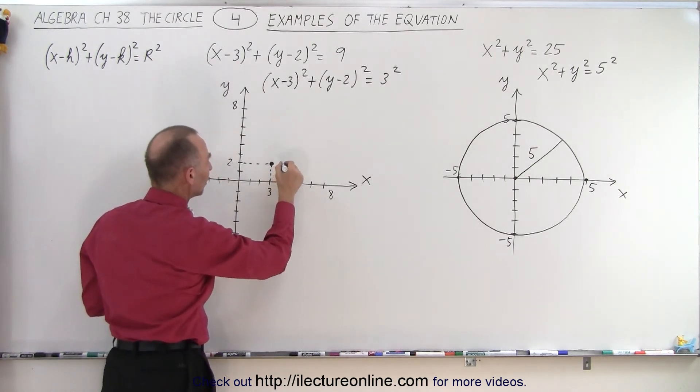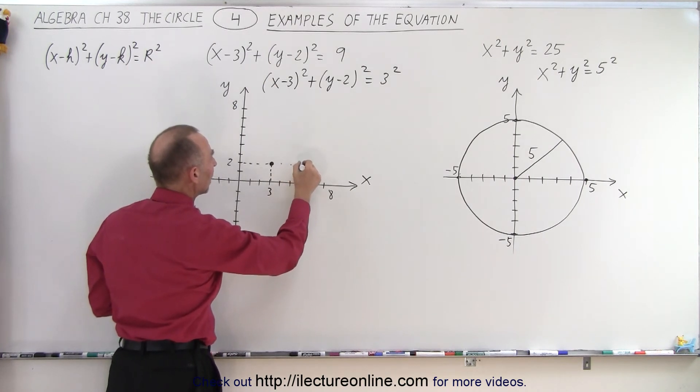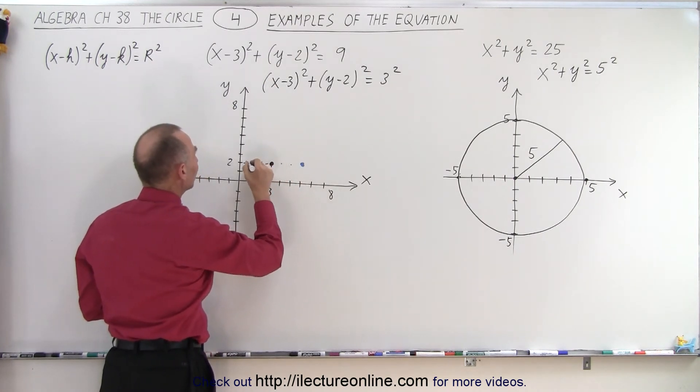So first of all, we go 1, 2, 3. Then we go negative 1, negative 2, negative 3.